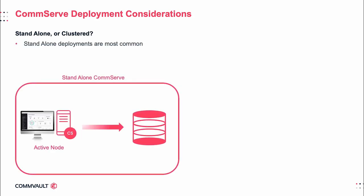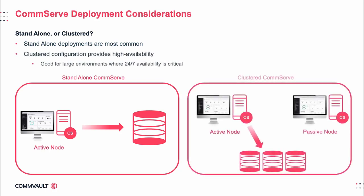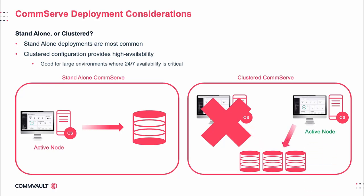Another consideration is whether the CommServe should be stand-alone or clustered. The most common stand-alone deployments use a single production CommServe. Clustering provides high availability of the CommServe — in a clustered configuration, multiple compute nodes work together as a single entity. If a failure occurs on one node, resources are redirected and the workload is redistributed to another compute node, ensuring constant access to the CommServe. Clustering does increase cost and complexity, but it can make sense in enterprise environments where automation and availability are critical. Clustering relies on Microsoft clustering technology or a supported third-party software solution.